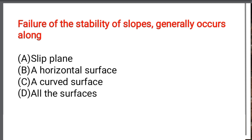Next question: Failure of stability of slopes generally occurs along — Option A: Slip plane. Option B: A horizontal surface. Option C: A curved surface. Option D: All of the surfaces. The correct answer is Option C: A curved surface.